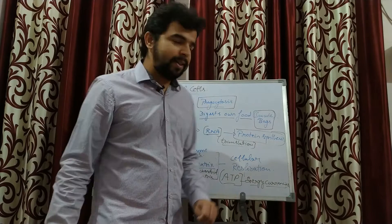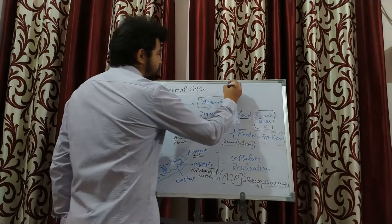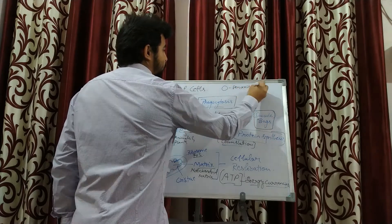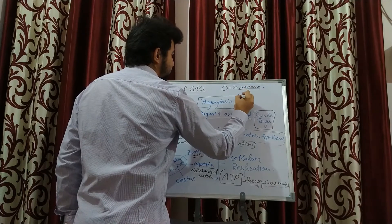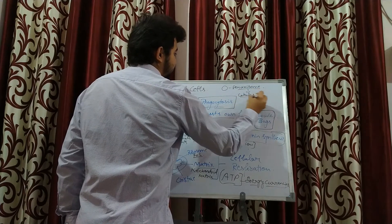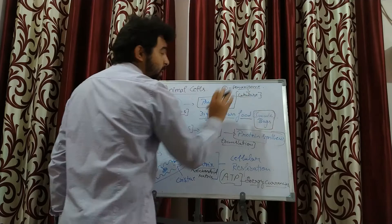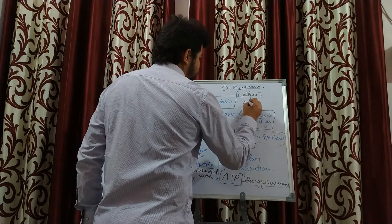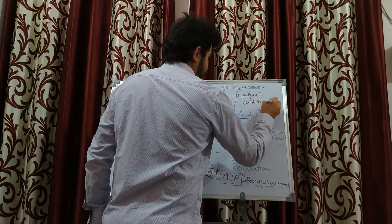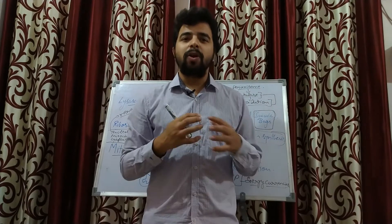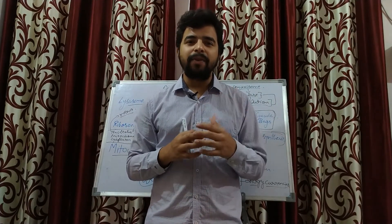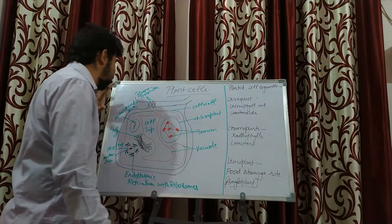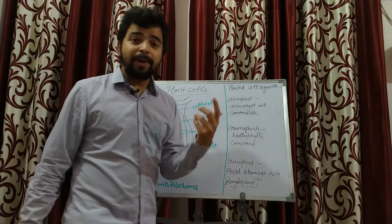Another organelle is the peroxisome. The enzymes present in peroxisomes are catalase, which help in oxidation. This concludes the animal cell. Now we move to the plant cell, where we will see some differences from the animal cell.